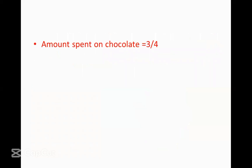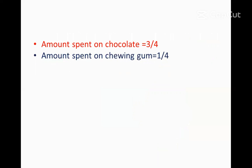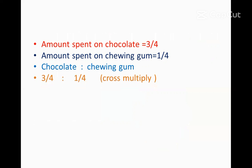Amount spent on chocolate is equal to three by four. Amount spent on Twingham is one by four. Now we are going to find the ratio between the amount spent on chocolate to the amount spent on chewing gum. Three by four is the amount spent on chocolate, and one by four is the amount spent on chewing gum. Now we are going to cross multiply them.